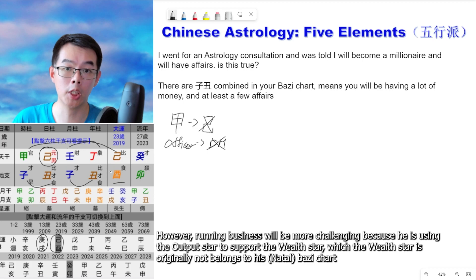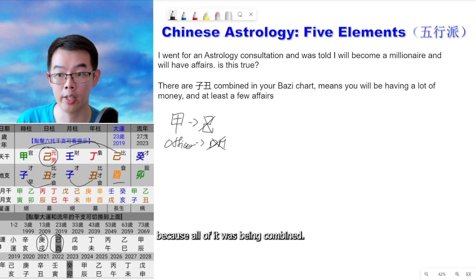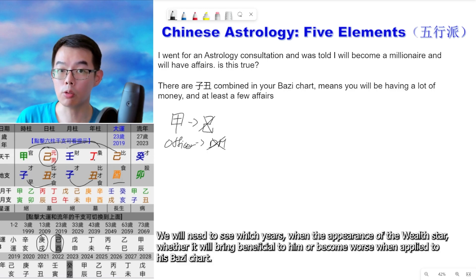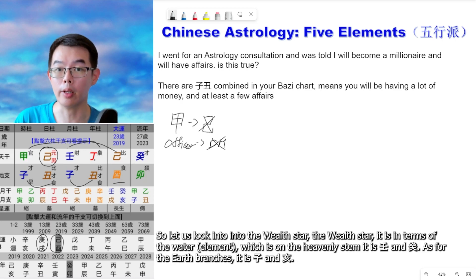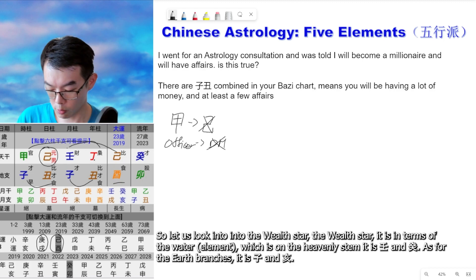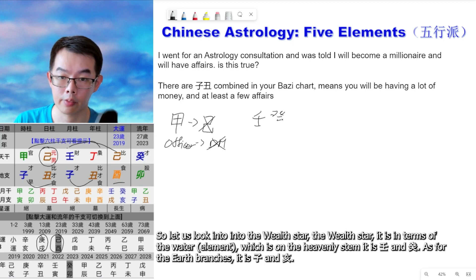However, running a business will be more challenging because he is using the output star to support the wealth star, and the wealth star originally does not belong to his Ba Zi chart as it was all combined away. We need to see in which years the wealth star appears and whether it will bring benefit or become worse when applied to his Ba Zi chart. The wealth star is water — on the heavenly stem it is Ren and Gui, and on the earth branches it is Zi and Hai.